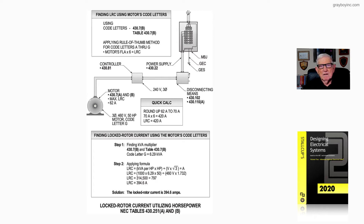In step two, we take the lock rotor current formula: kVA per horsepower times 1000, divided by the voltage times the square root of three — 1.732 — since this is a three-phase motor. When we do the math, we get 394.6 amps, which is basically what the motor would start at.